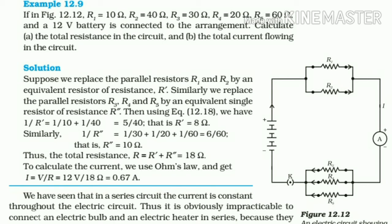And a 12 volt battery is connected. Find the total resistance and total current. First solve R1 and R2 in parallel. 1 by 10 plus 1 by 40 equals 5 by 40, which is 40 by 5 ohm, equals 8 ohm. Then R3, R4, R5 in parallel: 1 by 30 plus 1 by 20 plus 1 by 60 equals 6 by 60, which is 60 by 6 equals 10 ohm.